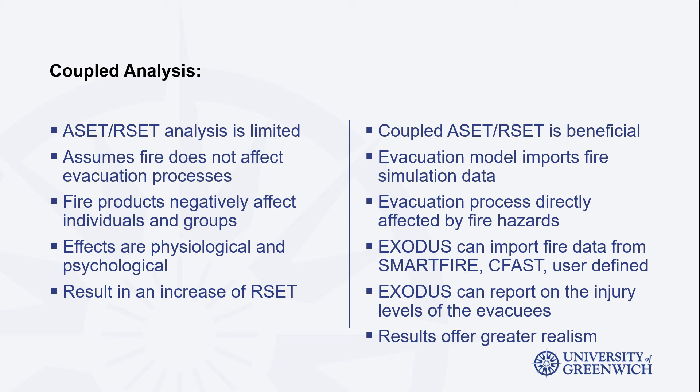Furthermore, if the evacuees are exposed to the fire products, then a psychological and physiological impact is expected. Evacuees may become disoriented in low visibility or when inhaling narcotic and irritant gases. Walking speeds will drop as people are affected by fire hazards. Some may choose to crawl to avoid the hot upper layer. All these adaptations will influence the evacuation choices and performance, and constitute information that is lost if ASET and RSET are considered independently from each other.